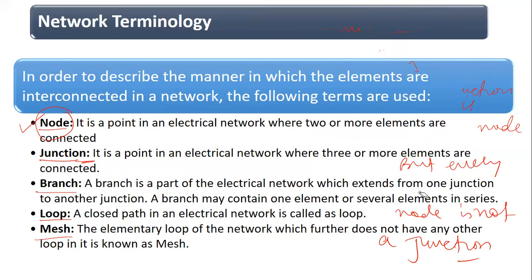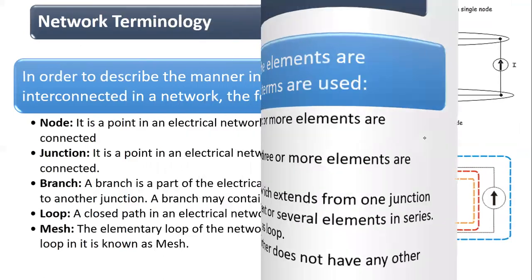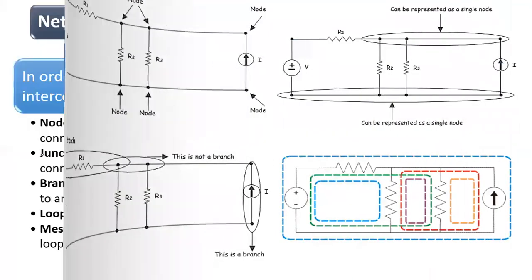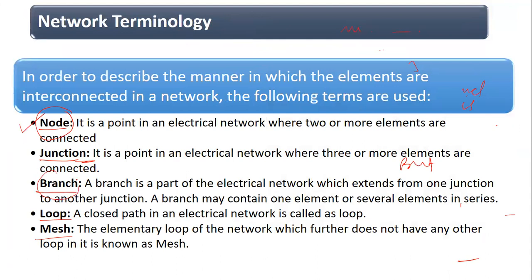A branch is basically any element — there may be one element in a branch or several elements connected in series. Any elements connected from one junction to another junction form a branch. A loop is nothing but a closed path. A mesh is the elementary loop — that loop which cannot be subdivided into further loops. Those loops which we cannot further subdivide are called meshes.